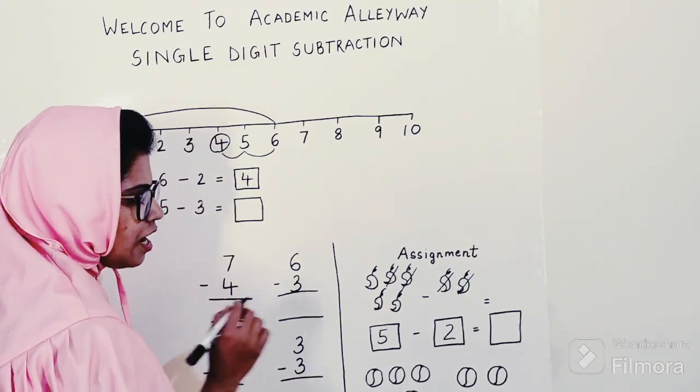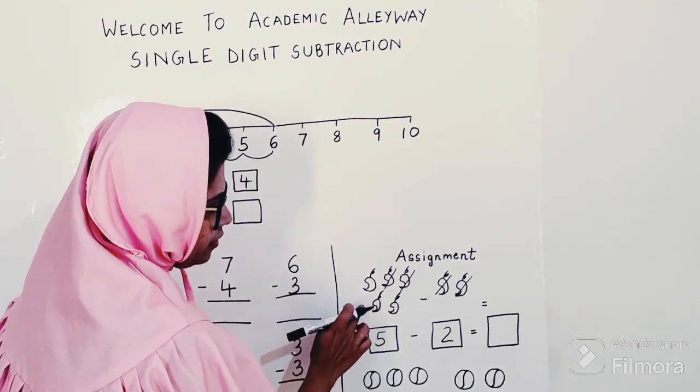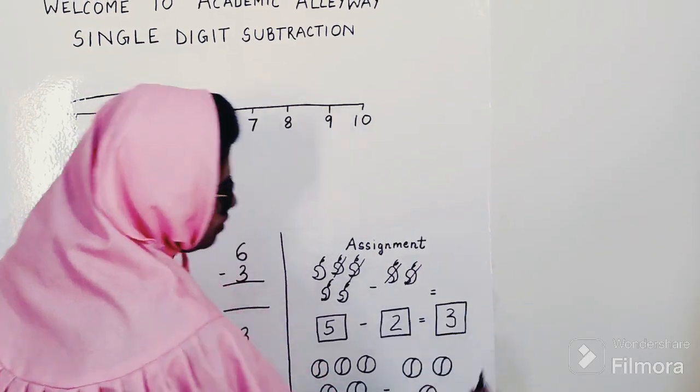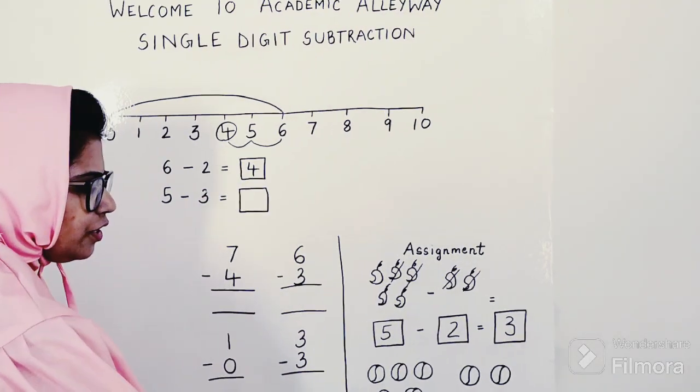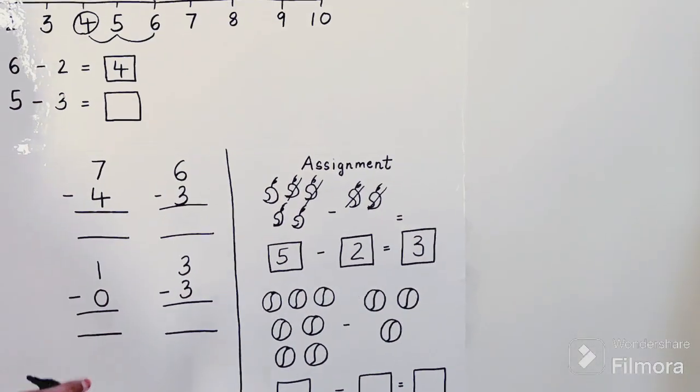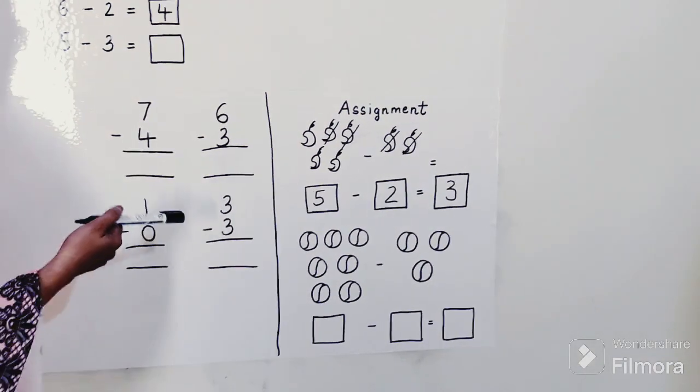So let's strike off these 2 mangoes from here. How many are remaining with me? 1, 2, and 3. So my answer over here is 3. Similarly, you can do this with another example and give them examples on and on for practice purposes.